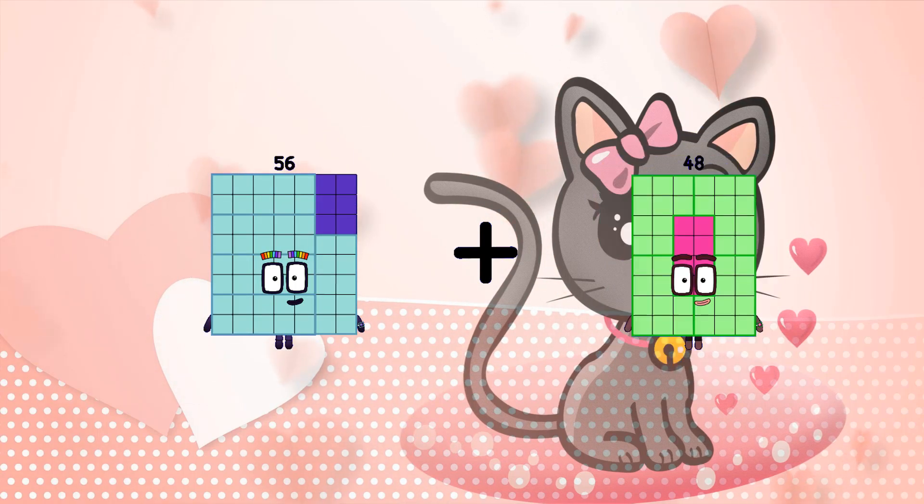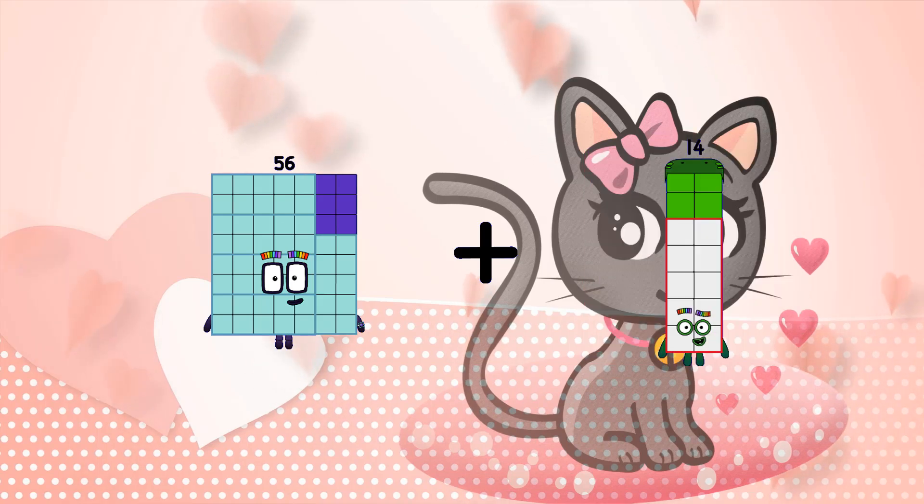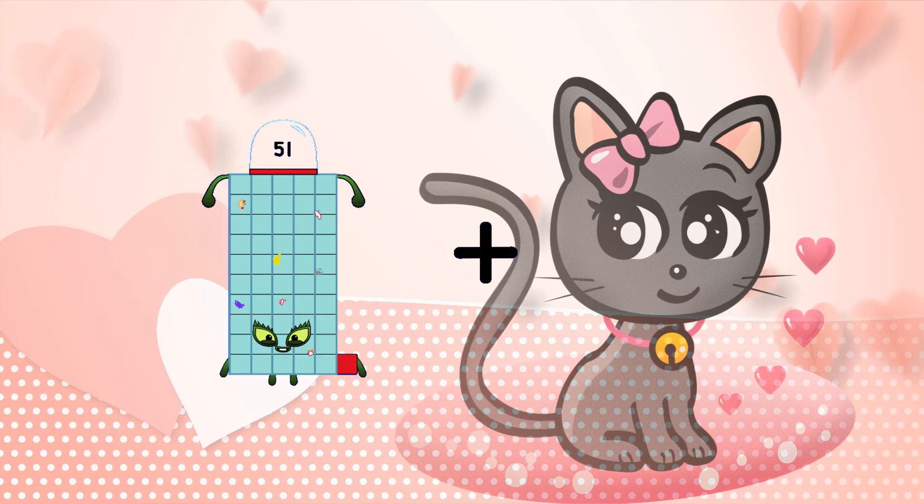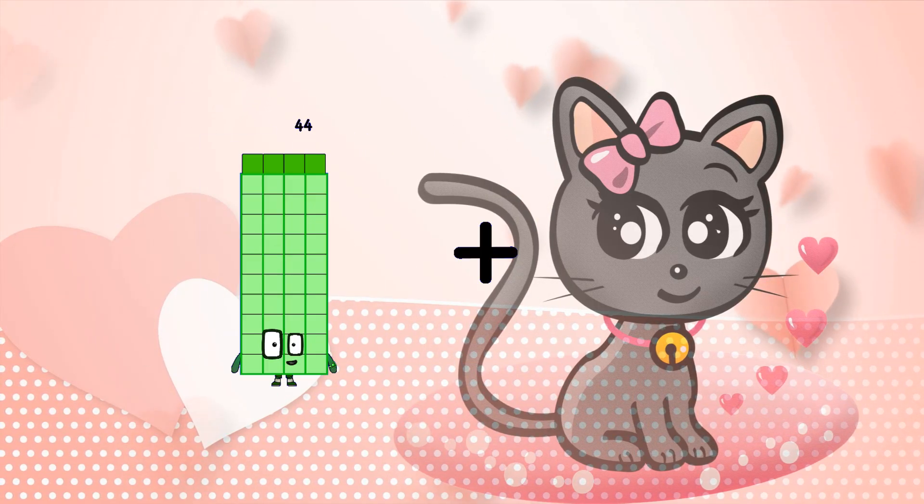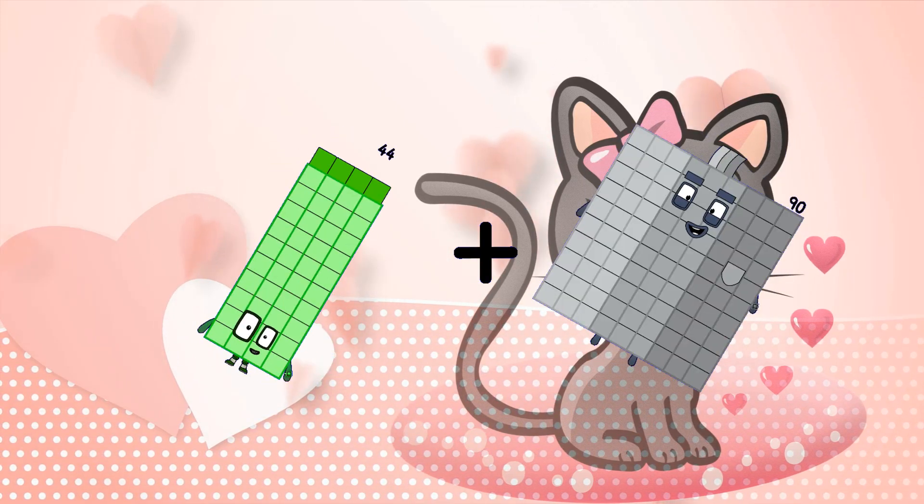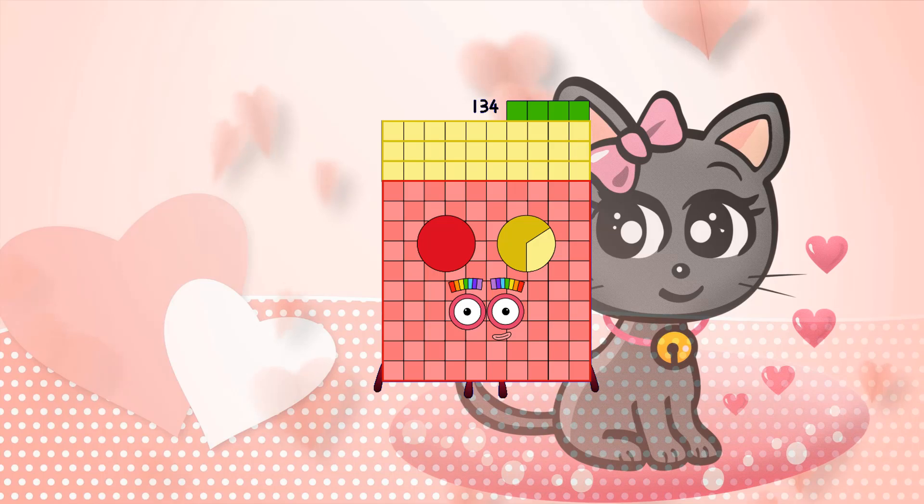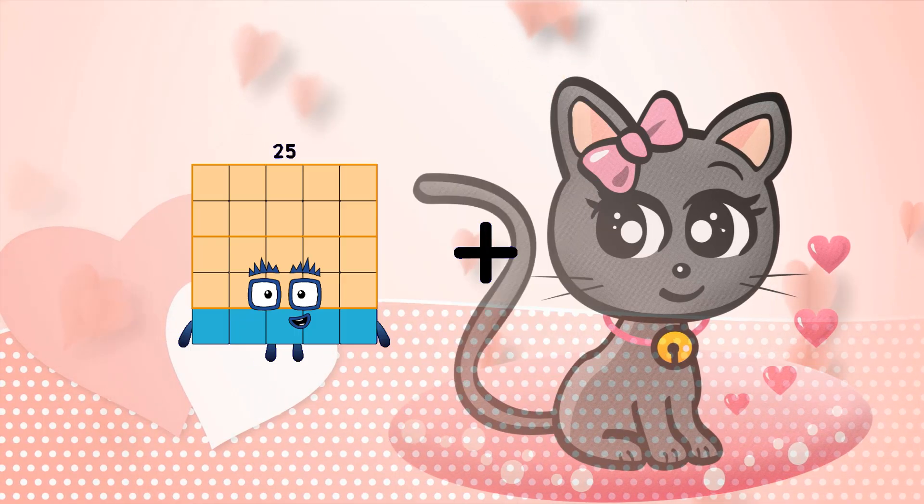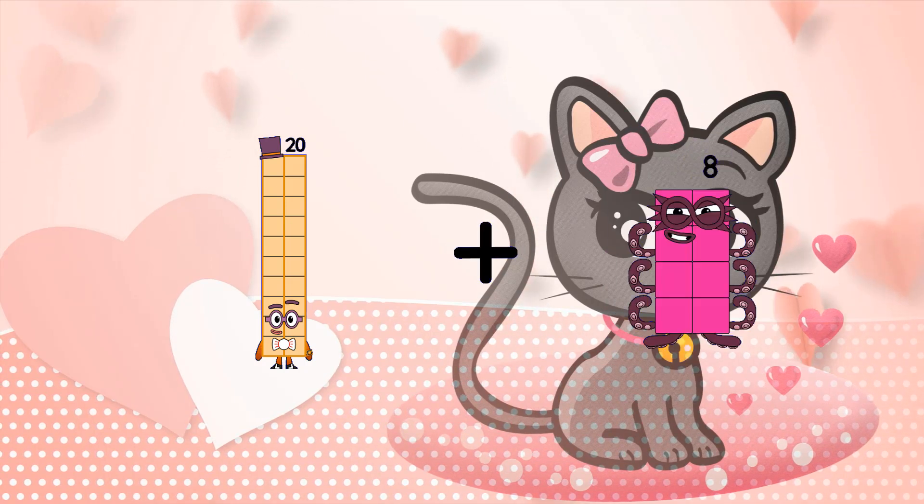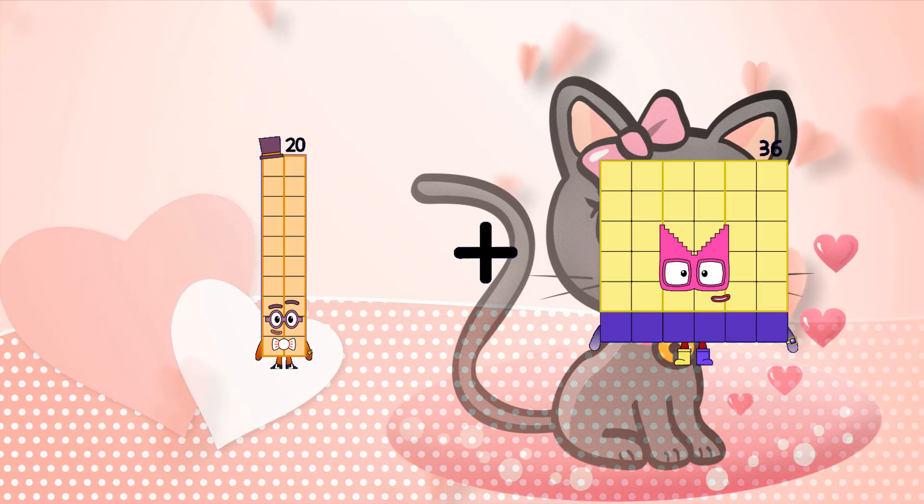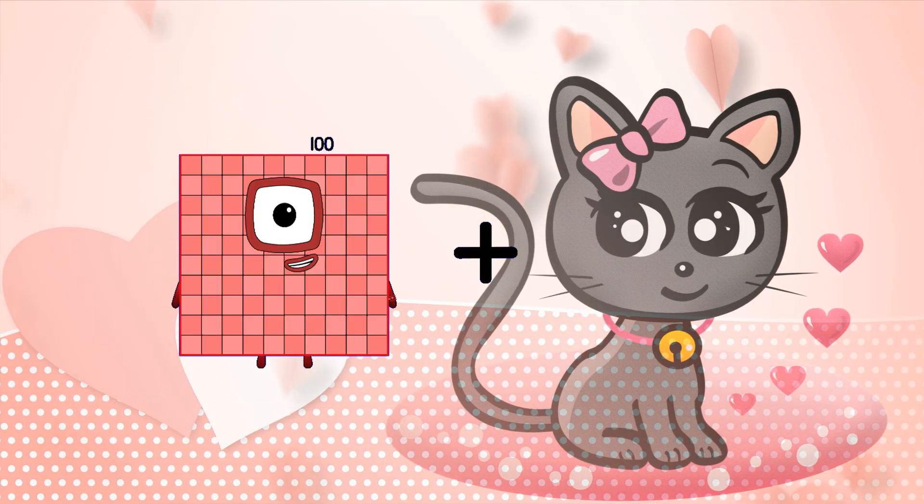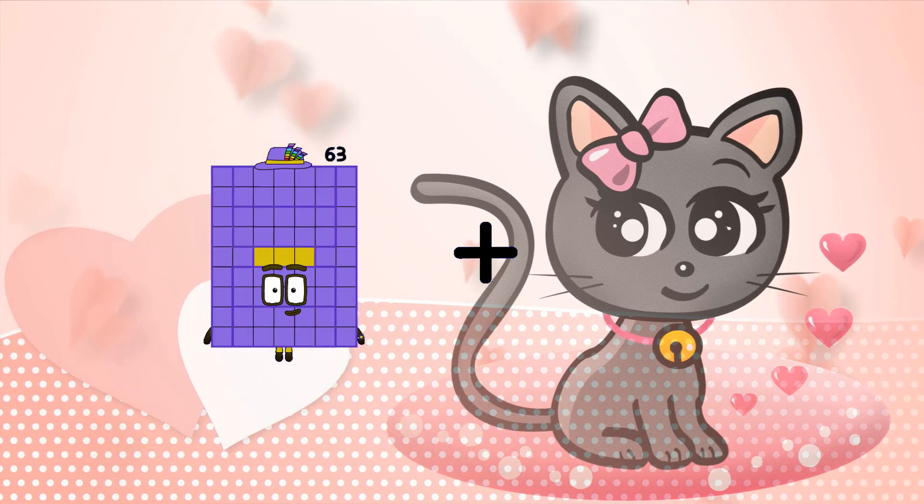Fifty-six plus fourteen equals seventy. Forty-four plus ninety equals one hundred thirty-four. Twenty plus thirty-six equals fifty-six. Sixty-three plus thirty-one equals ninety-four.